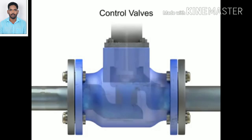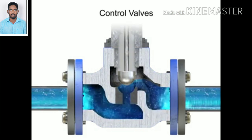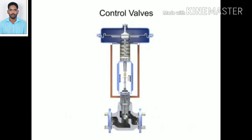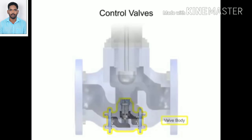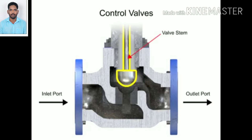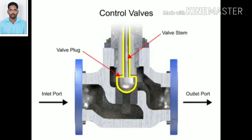Control valve actuators control fluid in a pipe by varying the orifice size through which the fluid flows. Control valves contain two major components: the valve body and the valve actuator. The valve body provides the fluid connections and a movable restrictor comprised of a valve stem and plug that is in contact with the fluid that varies the flow. The valve actuator is the component that physically moves the restrictor to vary the fluid flow.